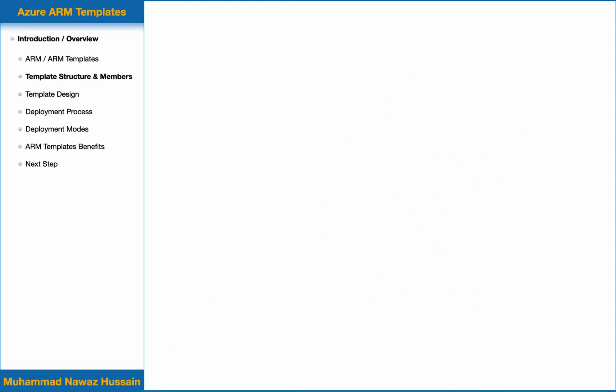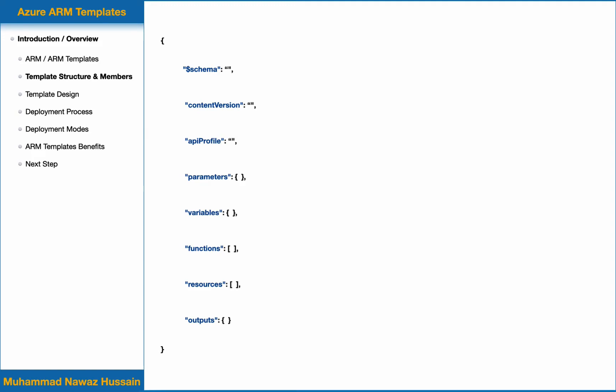You will use the same format for all of your template JSON files. As it is a JSON file, it will start with an open curly bracket and end with a close curly bracket. In any ARM template, you will have some or all of these members — some are compulsory or mandatory parts of ARM templates and some are optional, depending on your design.